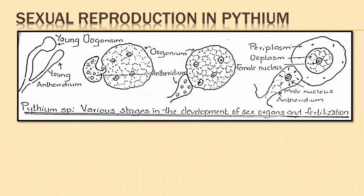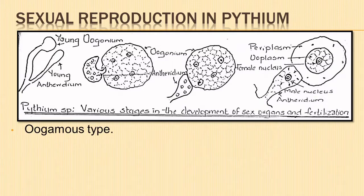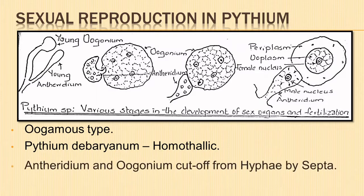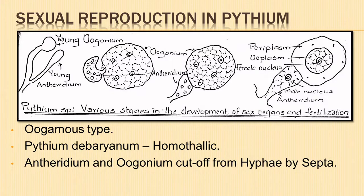Sexual reproduction in Pythium is oogamous and takes place during unfavorable conditions at the end of the growing season. Pythium debaryanum is homothallic. The male sex organ, antheridium, and the female sex organ, oogonium, develop in close proximity, either on the same hypha or different hyphae embedded in the host tissue.